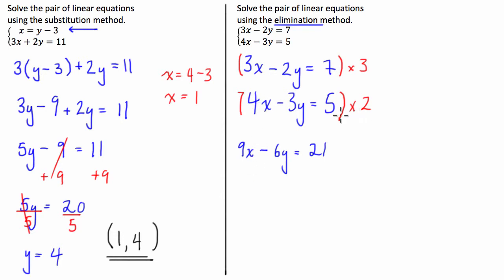Then we have 2 times 4 which is 8x. 2 times negative 3 is negative 6y equals 5 times 2 is 10.